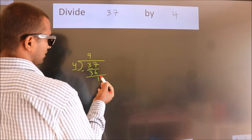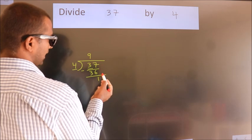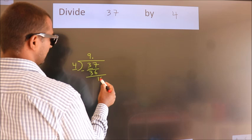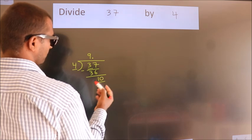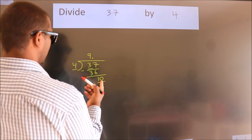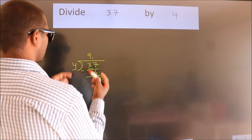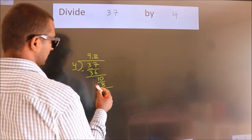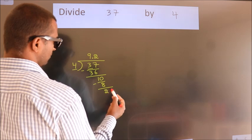After this, no more numbers to bring down. So what we do is, we put a dot and take 0. So 10. A number close to 10 in the 4 table is 4 twos, 8. Now we subtract. We get 2.